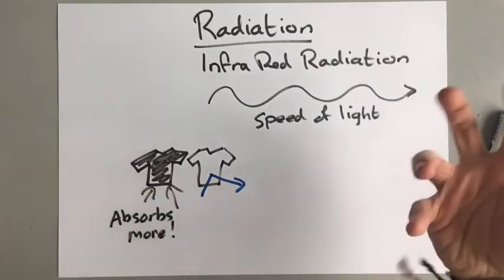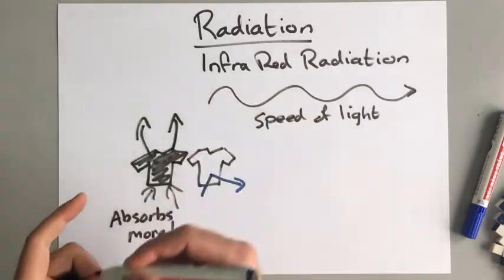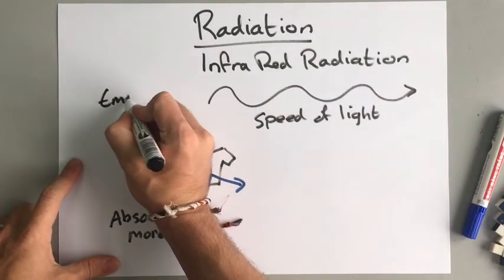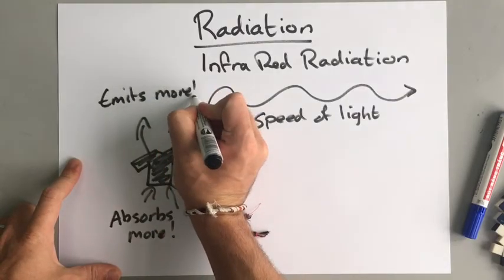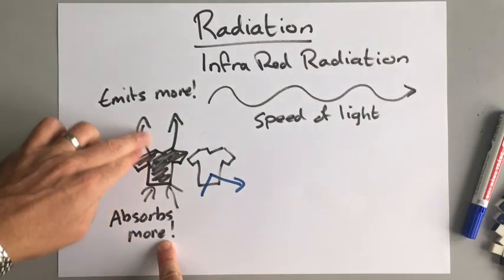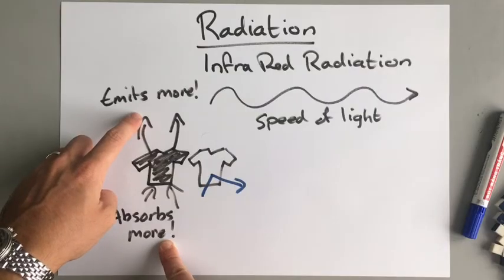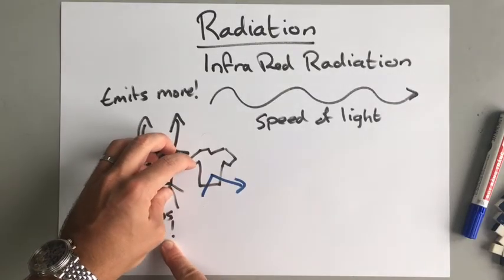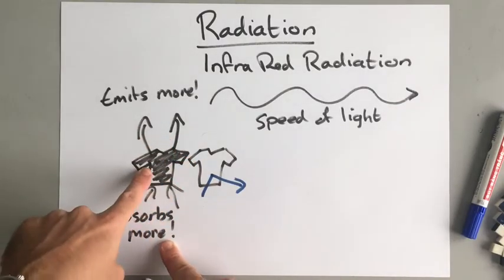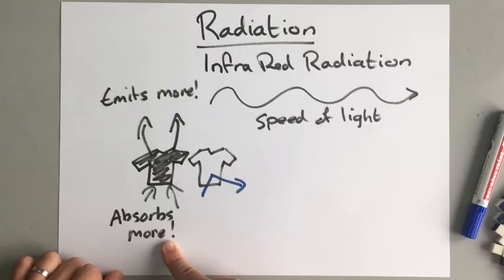If you are hot and you go out into, for example, the Arctic wearing a black T-shirt, the black will actually give out more energy. Black also emits — meaning gives out — more energy. So black absorbs more infrared radiation, but it also emits more. If the black thing is hotter than the surroundings, it's emitting more radiation, so it gets cold faster. But if the black thing is colder than the surroundings, it absorbs more and gets hotter faster. A good way to remember this is that black things change temperature quicker, whether that's emitting or absorbing more infrared radiation.